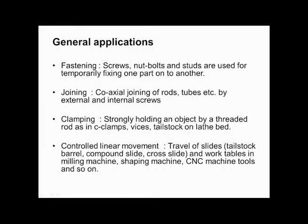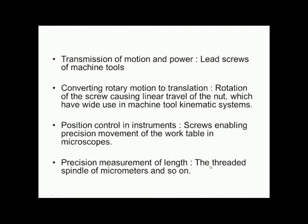Screw threads strongly hold an object by a threaded rod, as in C-clamps, vises, and tailstock on a lathe bed. They are used for controlled linear movement — that is, for travel of slides and movement of work tables in milling machines, shaping machines, and CNC machine tools. Screw threads are also used for transmission of motion and power; for example, a lead screw used in a lathe transmits motion and power.